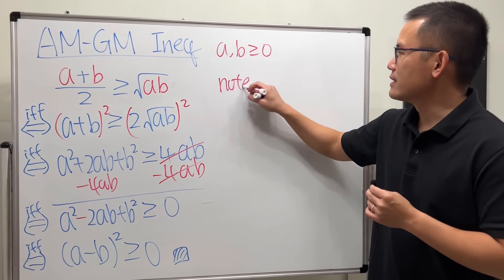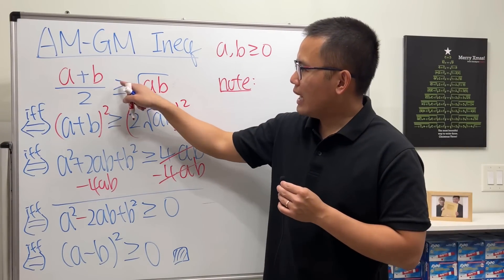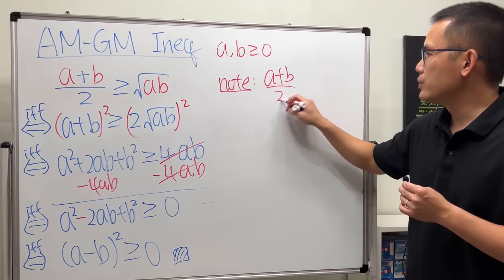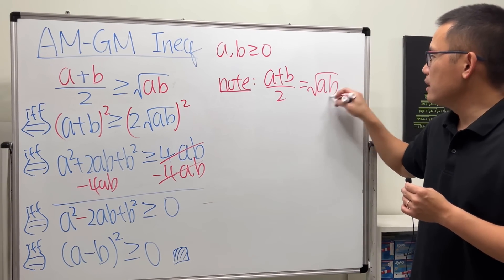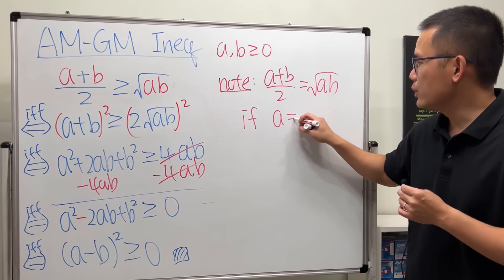Now, little note on the side real quick: if you want to have the equal sign—(a plus b)/2 equals square root of ab—this right here is true if a is equal to b.